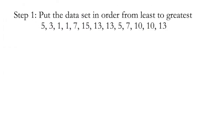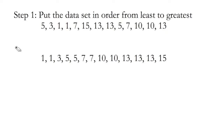Step number one is to put the data set in order from least to greatest. You see a normal data set, so we need to put it in order with the smallest numbers first. If you were to go through it, you'd get: 1, 1, 3, 5, 5, 7, 7, 10, 10, 13, 13, 13, 15. Write down every single number. The best way to check is to make sure you have the same amount of numbers on top and on bottom — and in this case, we do.